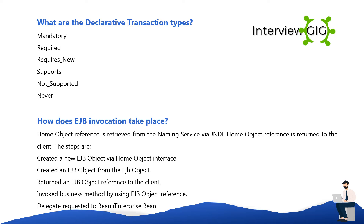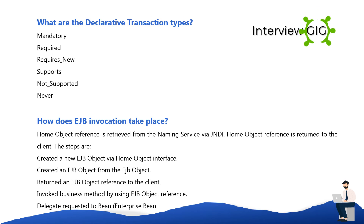How does EJB invocation take place? The home object reference is retrieved from the naming service via JNDI. The home object reference is returned to the client. A new EJB object is created via the home object interface. An EJB object is created from the EJB object. An EJB object reference is returned to the client. The business method is invoked using the EJB object reference. The request is delegated to the Enterprise Bean.